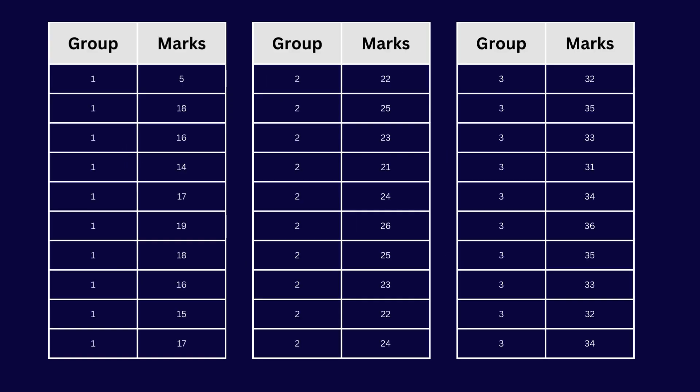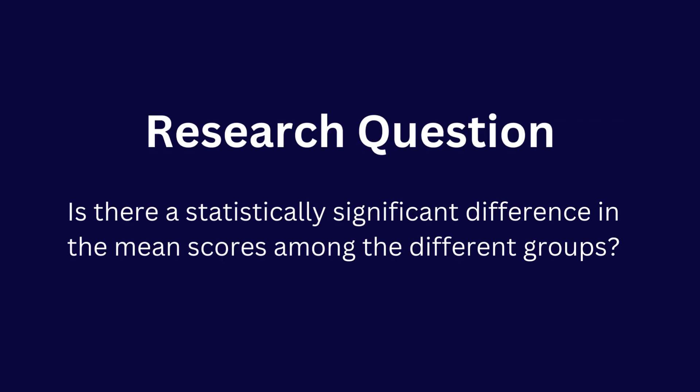Let's build a research question according to our data set. In this data set we have three groups and these are the marks of students. Our research question is: Is there a statistically significant difference in the mean scores among the different groups?